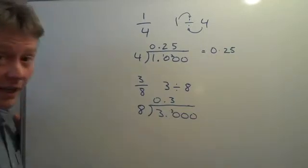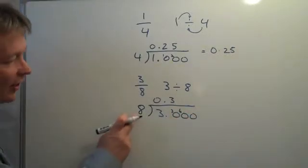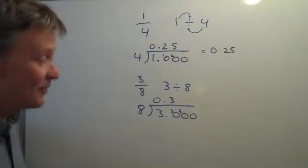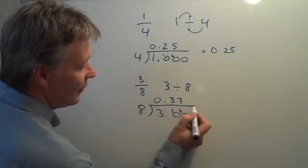And because I have 30 here, I have 6 left over. So 8 into 60, well, again, I know my times tables. There's 7 8s of 56. So 7 there.